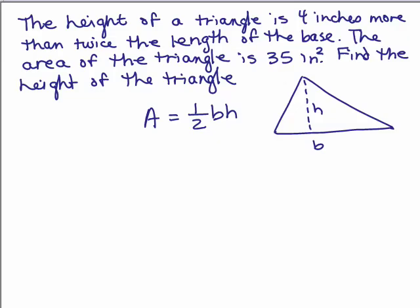We're going to do a geometry problem where if we set up the problem we'll be able to solve it by factoring. The height of a triangle is 4 inches more than twice the length of the base. The area of the triangle is 35 square inches. Find the height of the triangle.